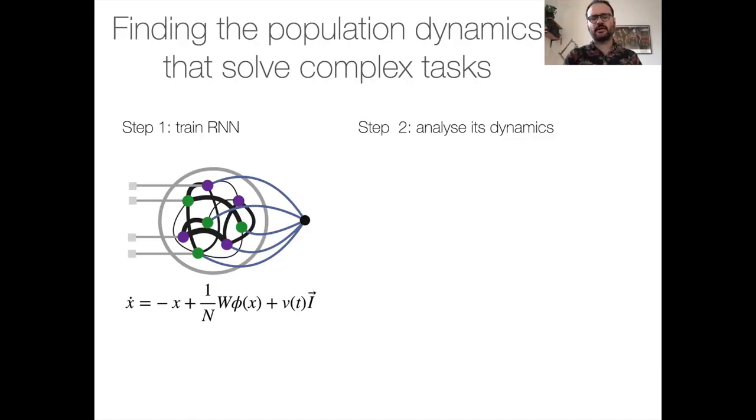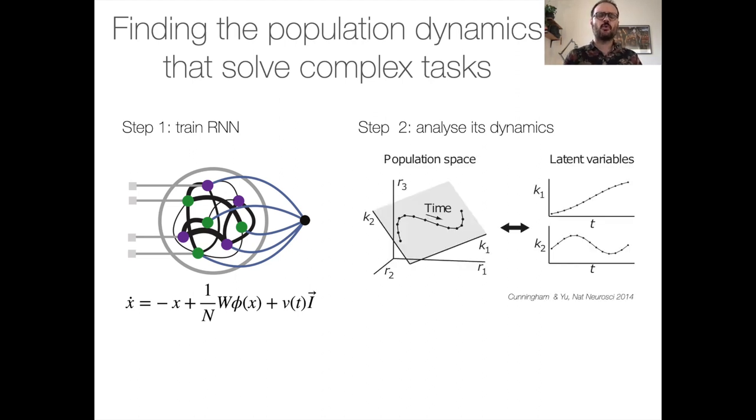A typical approach to tackle these kind of questions is to train these very flexible models, RNNs, to solve the complex task of interest. And then once you have the RNN that performs the task very well, you try to reverse engineer what was the computational solution that this network found.